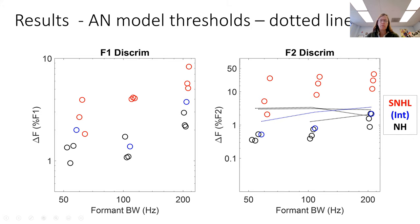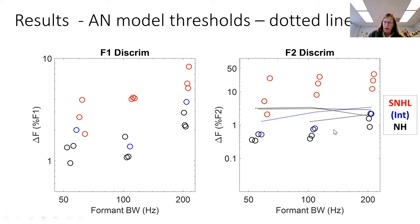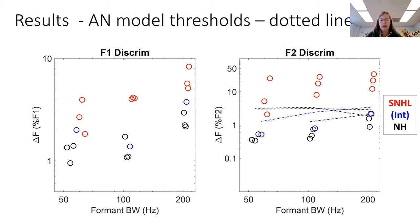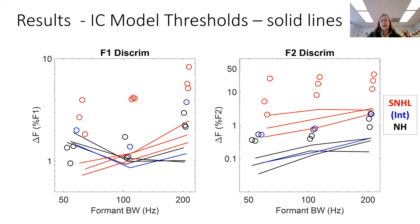If we add the model thresholds from the auditory nerve — based on the excitation patterns of the auditory nerve population response — for many conditions, especially F1, there was no threshold for the model; it was not able to do the discrimination over the range tested. In a few cases for listeners with normal hearing in the F2 range, we were able to predict thresholds, but they were higher than those of the listeners. We've since moved on to examine the fluctuation cues using the IC model.